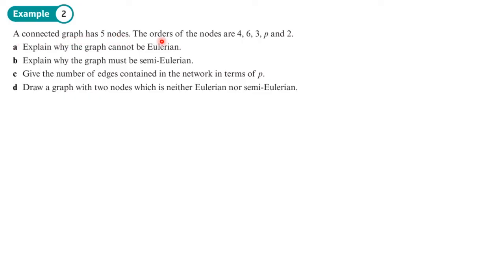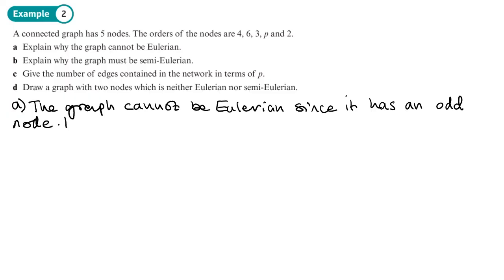So we've got a connected graph that has five nodes. The order of the nodes are 4, 6, 3, P and 2. Explain why the graph cannot be Eulerian. Well, for it to be Eulerian, all of the nodes would need to be even. And we have one odd node, so at best it can be semi-Eulerian if this has an odd order. So we'll just write down the graph cannot be Eulerian since it has an odd node or odd vertex. And we could probably add in a Eulerian graph, all the nodes or vertices must be even.